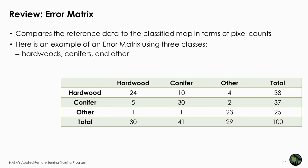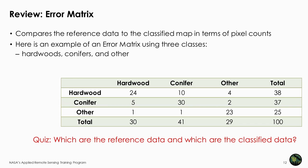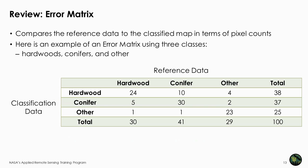The error matrix compares the reference data to the classified map in terms of pixel counts. Here's a quick quiz: which are the reference data and which are the classified data in this table? The classification data are on the left column and the reference data are across the top. The correctly classified pixels are the values on the diagonals and the incorrectly classified pixels are on the off diagonals. The total number of classified pixels are on the far right column, and the total number of reference data pixels are along the bottom row.